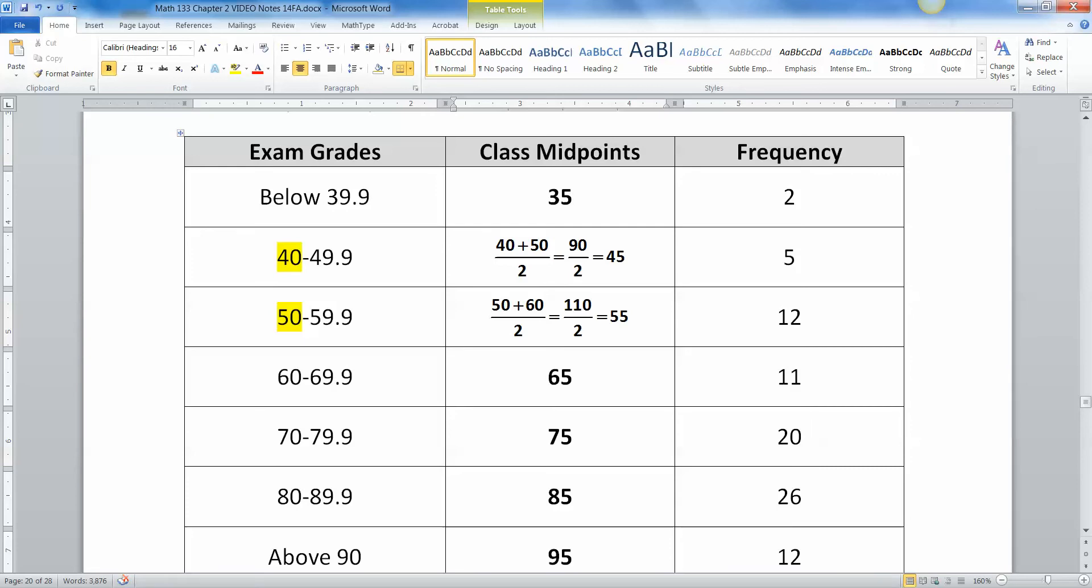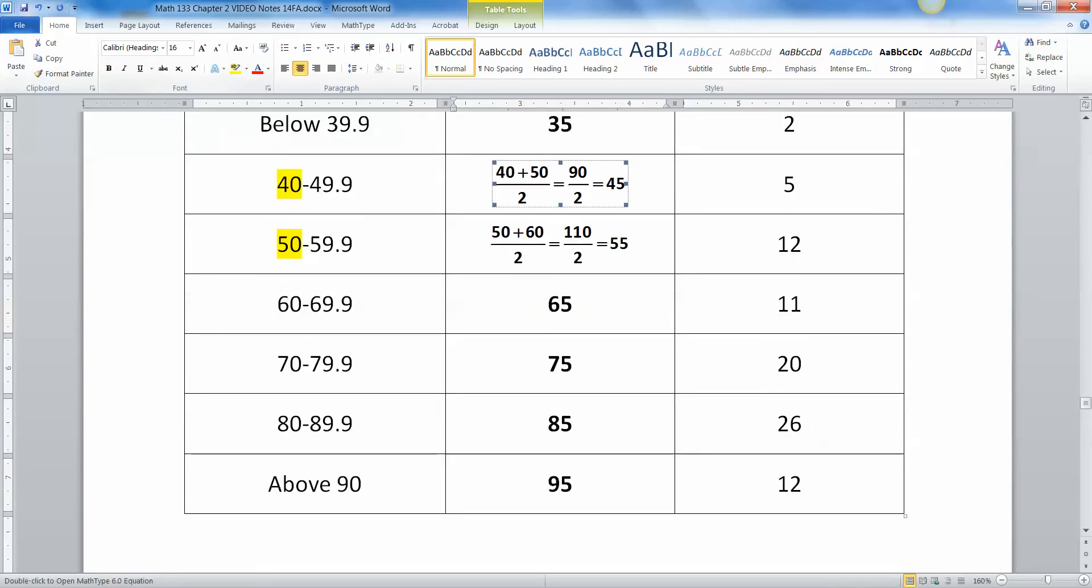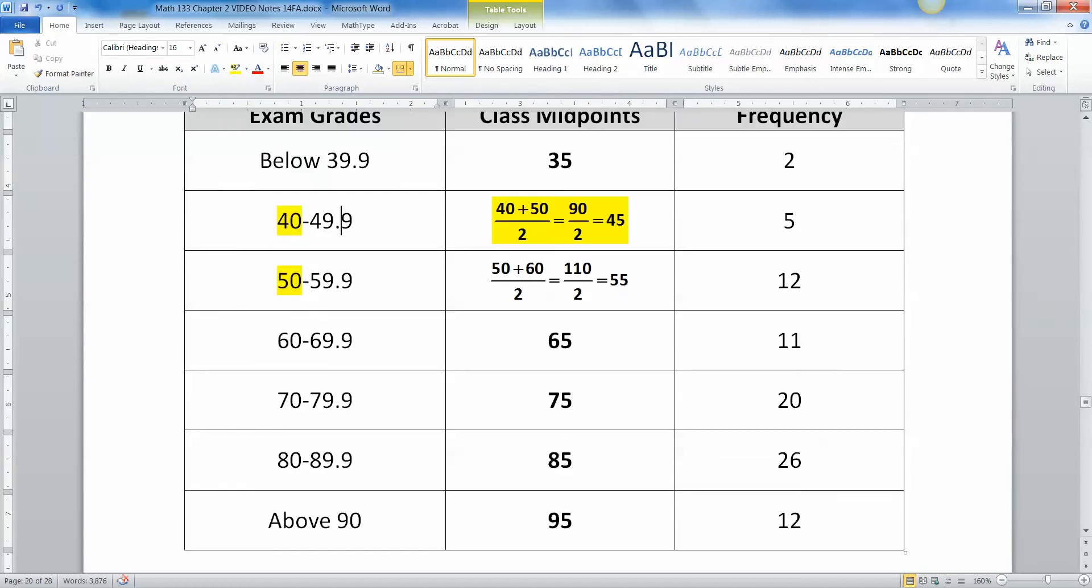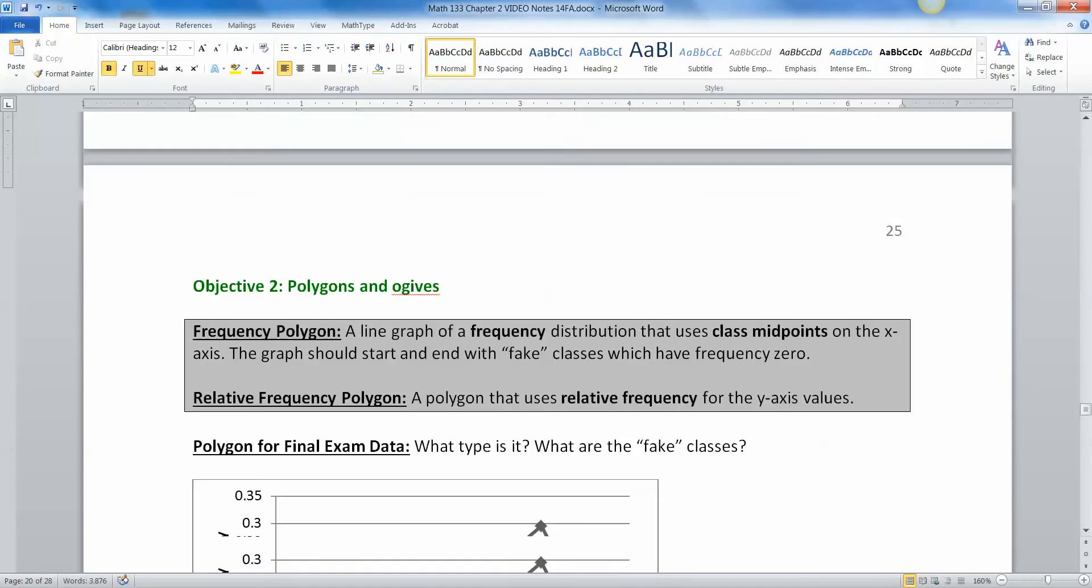So that's how to find class midpoints. But always remember that what you do is you add up consecutive lower class limits. Do not add lower and upper. That is completely incorrect. Add lower plus the next lower. All right. We're done with that section.